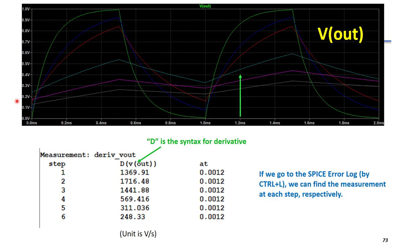After we run the transient simulation, we can see the same waveform in the first figure. And if we go to the SPICE error log by Ctrl L, we can find the measurement at each time step respectively.